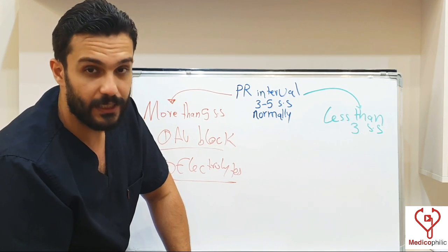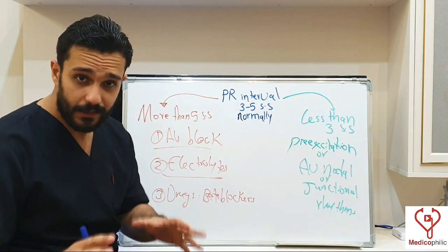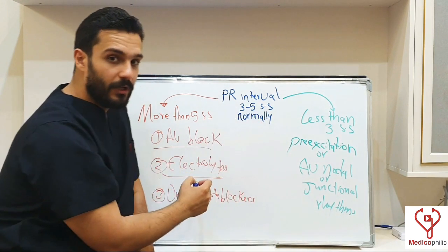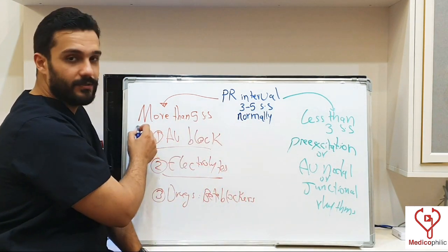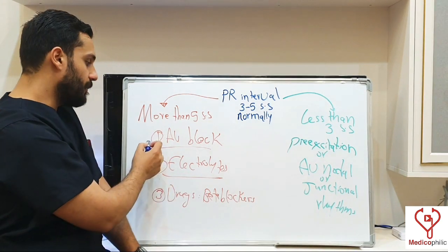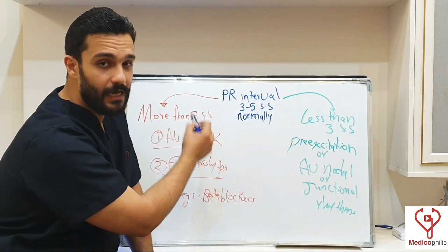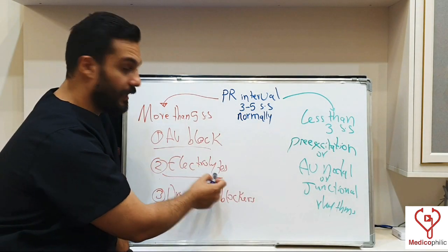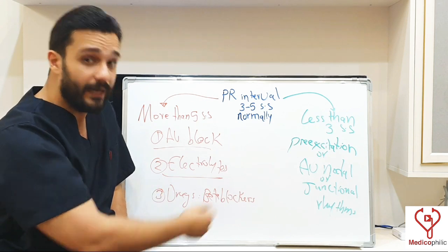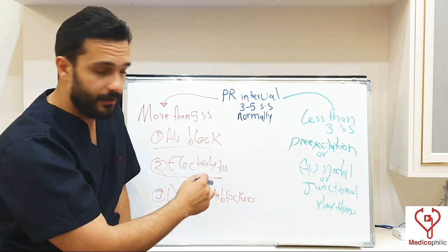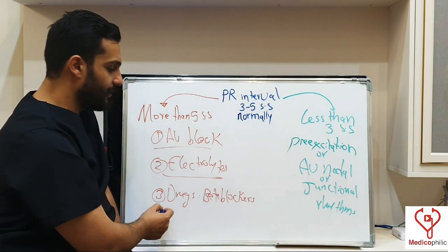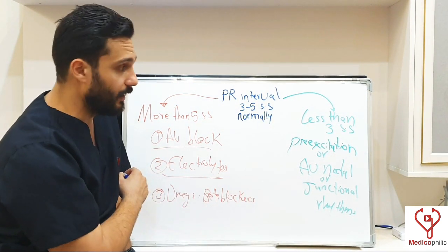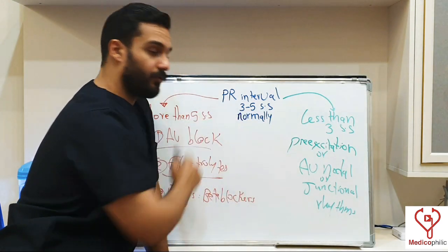We are going to talk about Wolff-Parkinson-White syndrome separately in a separate video. In summary: PR interval is normally between 3 to 5 small squares. If more than 5 small squares, it is called long PR interval. The most common cause is AV block, which has three types — first, second, and third degree AV blocks. The second cause is electrolytes, such as hyperkalemia and hypercalcemia. PR interval may also be prolonged by drugs like beta blockers and calcium channel blockers.